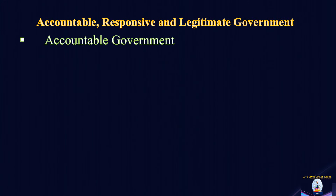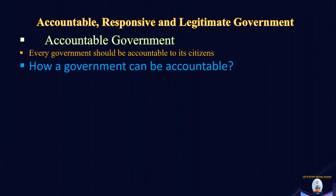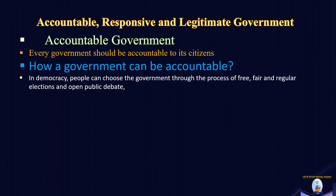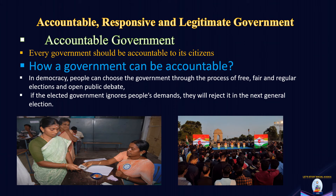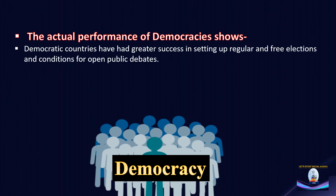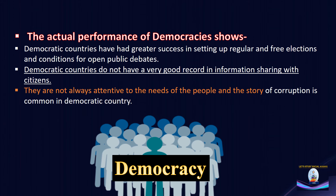Now the accountable government — the most fundamental political outcome of democracy. Every government should be accountable and answerable to its citizens. In democracy, people can choose the government through the process of free, fair and regular elections and open public debate. If the elected candidate or government ignores people's demands, they will reject it in the next election — if people are not satisfied, they will not vote for it. So the government has to be accountable. Looking at the actual performance of democracy, the record shows that democratic countries have had greater success in setting up regular and free elections and conditions for open public debate. However, they do not have a very good record in information sharing with citizens, are not very attentive to the needs of the people, and the story of corruption is very common in every democratic country.